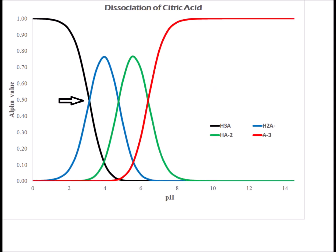Here we see the first crossover between the fully protonated citric acid and the monoanion, occurring around the pKa of Ka1, which gives a value of about 3.13. Next is the crossover between the monoanion and the dianion, corresponding to a pH equal to the pKa of Ka2, giving a value of around 4.76.